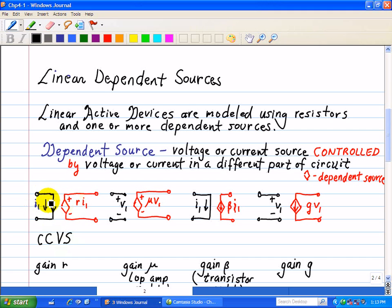The source in black on the left denotes the independent source controlling the dependent source shown in red. This is a current controlled voltage source, abbreviated CCVS.